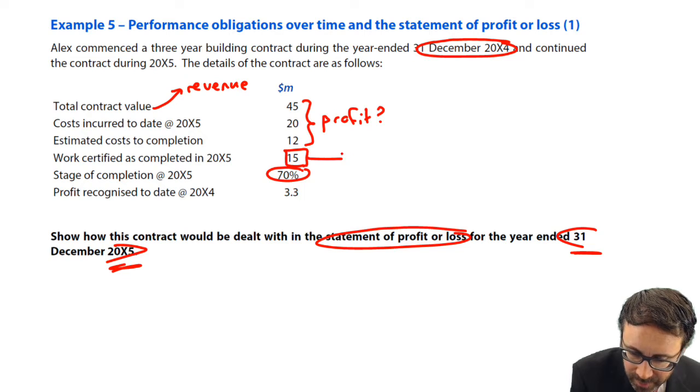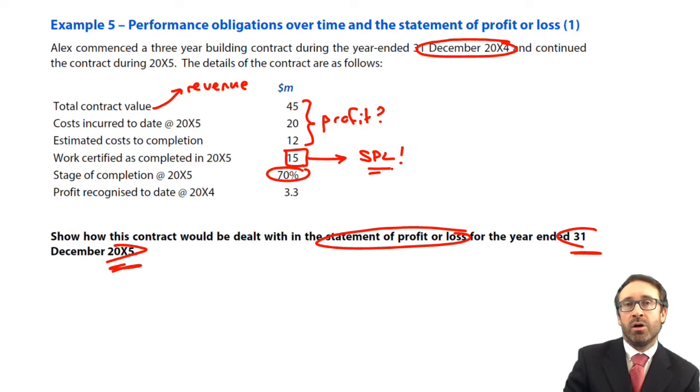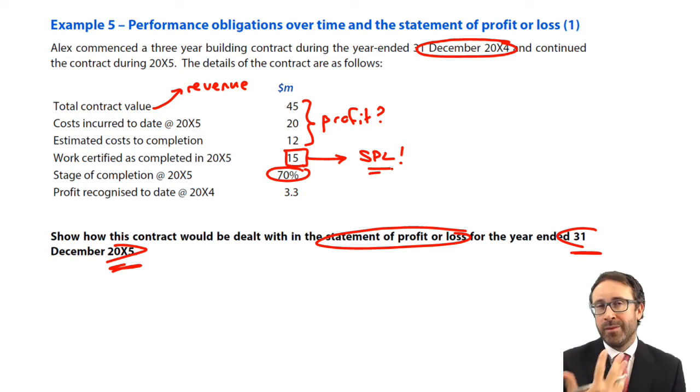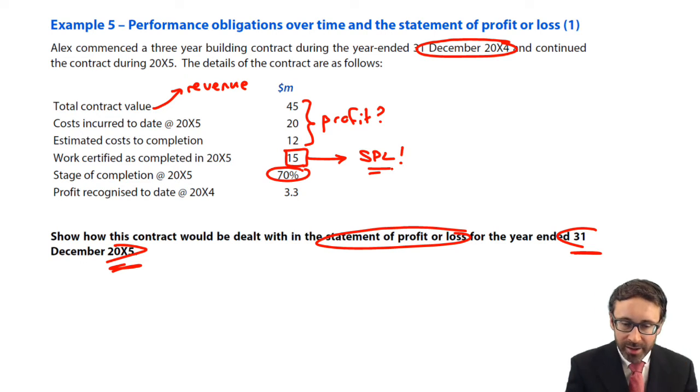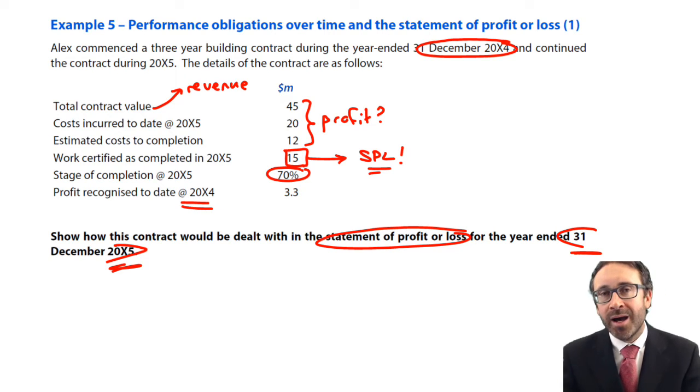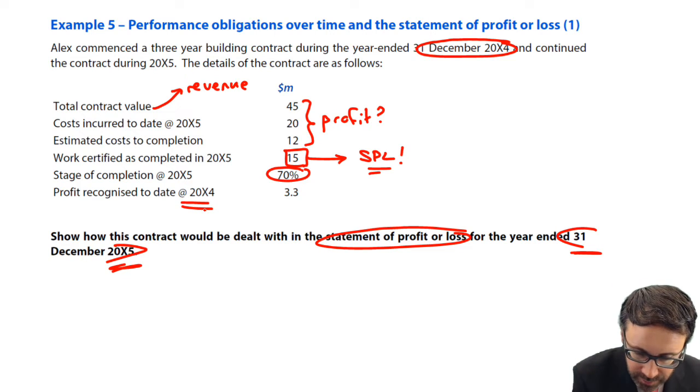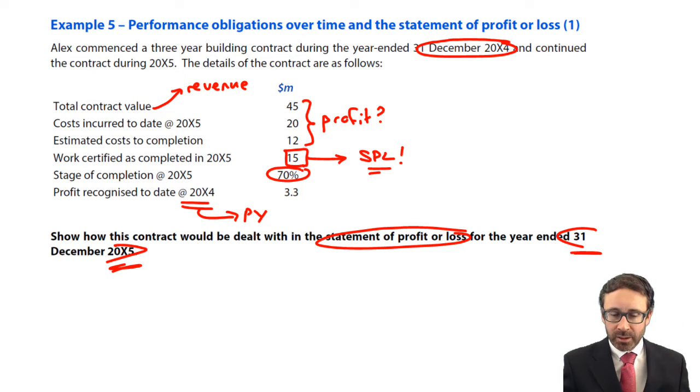In this year, in X5, the amount that we have completed in relation to revenue, it's been certified by a quantity surveyor, is there at $15 million. So that figure there is going to appear in our statement of profit loss for this year because it's looking at the year-ended December X5. So in that year-ended December X5, $15 million has been certified. We're told that 70% has been completed and then the key bit, the profit recognized to date at 20X4. So what has already been recognized, i.e. in that previous year, is $3.3 million. Okay, so how does that all fit together?